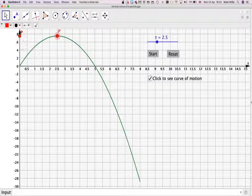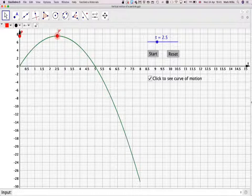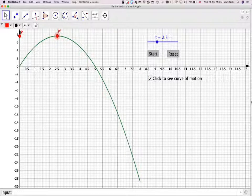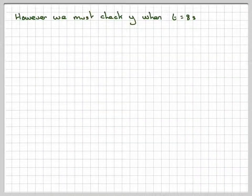Right, but we also need to consider the end point here. What happens at the end point here? Is this distance here greater than this distance here? If so, that is the greatest distance. However, we must check the y when t = 8 seconds.